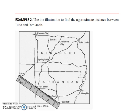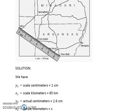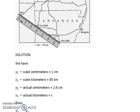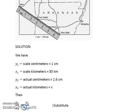We're going to use the scale and the amount of centimeters between Tulsa and Fort Smith and a proportion to find how many kilometers there are between Tulsa and Fort Smith. Using the proportion for direct variation, we have x1, y1, x2, and y2. We'll let y1 be the scale in centimeters, so 1 centimeter. We'll let x1 be the kilometer scale measurement of 85 kilometers. We'll let y2 be the actual centimeters between Tulsa and Fort Smith, which was about 2.6 centimeters. And then we'll let x2 be the actual kilometers between Tulsa and Fort Smith — we don't know that yet, so we'll use the variable x.